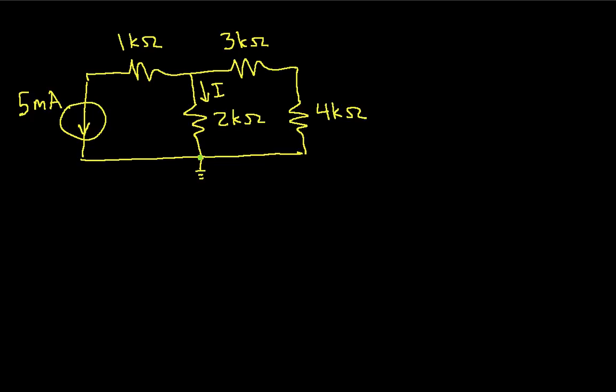So step two is to assign node voltages. For this node between the 1k ohm resistor and the 5 milliamp source, we'll assign v1. For this node, we'll assign v2. And for this node, we'll assign v3. We're already through two steps, and so far it's gone pretty well.